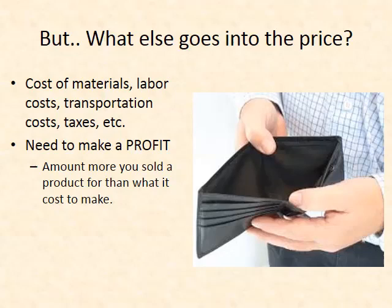What else goes into the price of things you buy? Supply and demand is one thing, but you cannot sell a product for less than it cost to make — otherwise you lose money. You have to factor in cost of materials: how much did the flour, chocolate chips, and everything else cost? That has to go into the price. But it also has to cover labor costs — paying someone to make the cookies — plus transportation costs and taxes. There are a lot of different expenses, so there is a need to make a profit. You take the amount it costs you to make and charge more than that in order to make money.